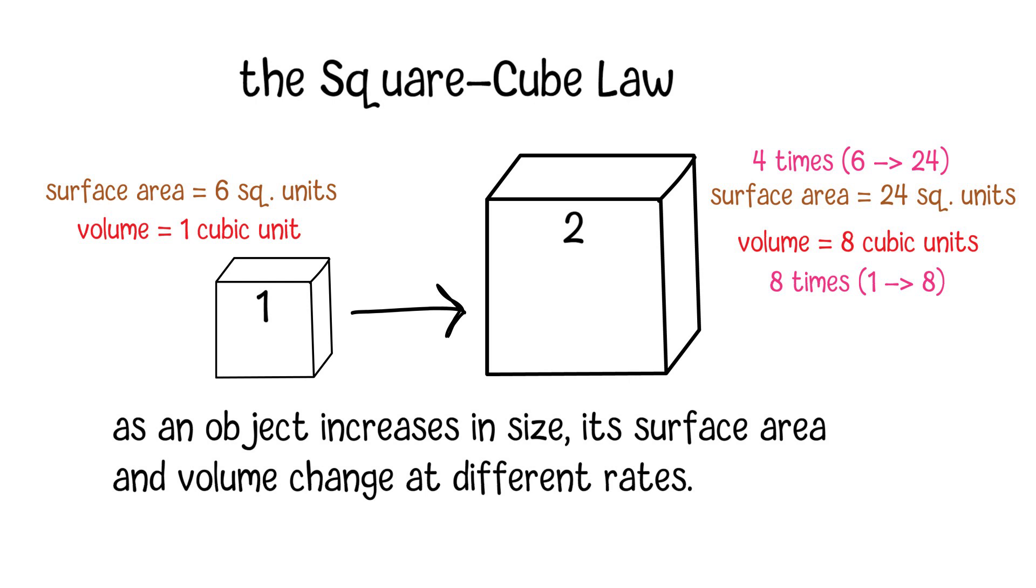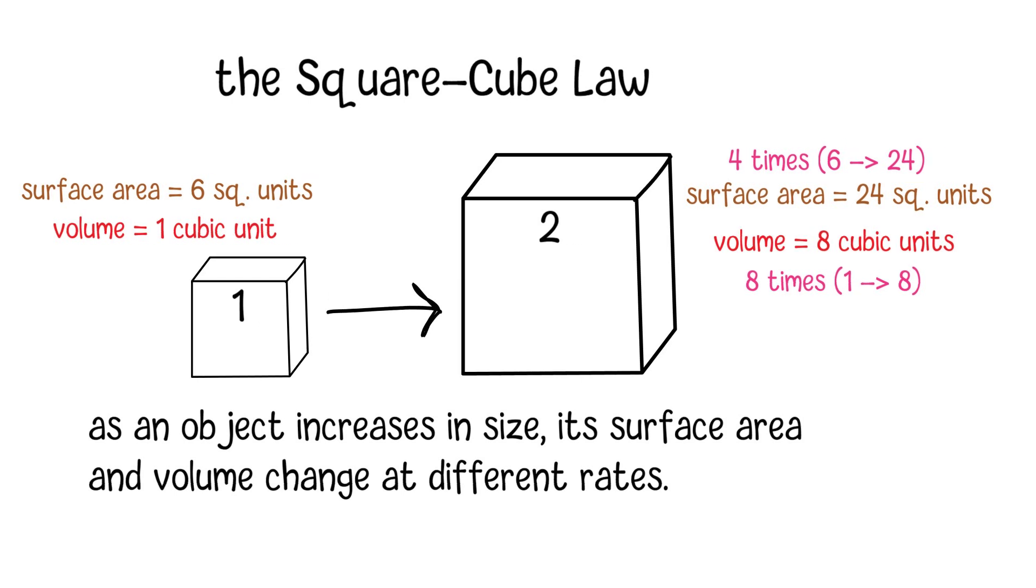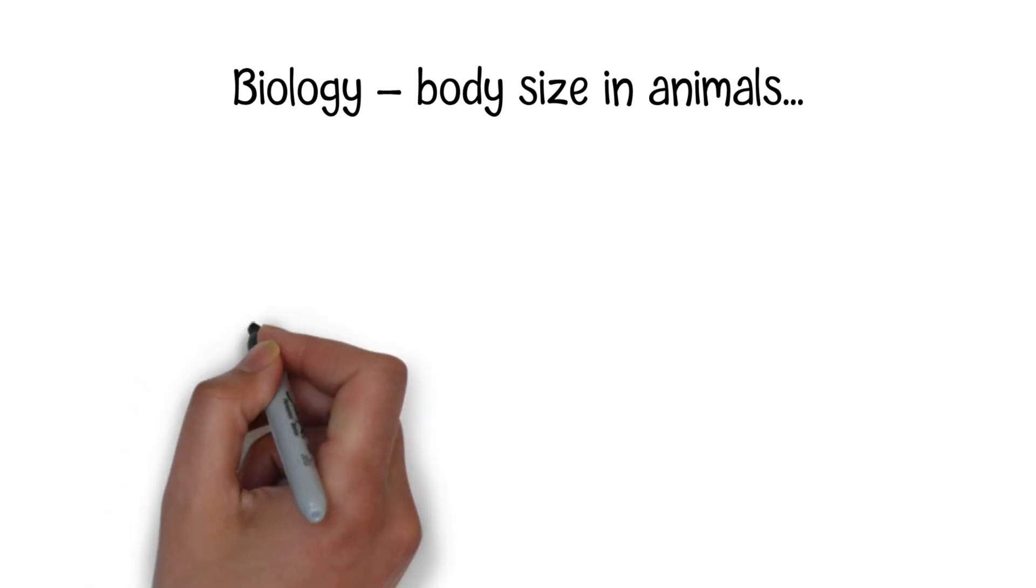The square cube law has profound implications in biology. One example is body size in animals. Larger animals have to deal with challenges related to their weight, like supporting their bodies and maintaining heat.